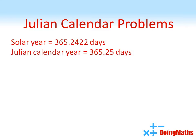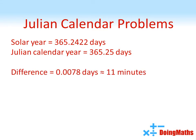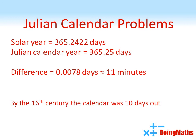Using the Julian calendar, there was a year of 365.25 days, much closer to the actual value of 365.2422, and the calendar and the seasons stayed in sync much better than before. Unfortunately, there was still a difference of about 11 minutes a year. This doesn't sound like much, but it added up, and by the 16th century, the calendar was 10 days out.